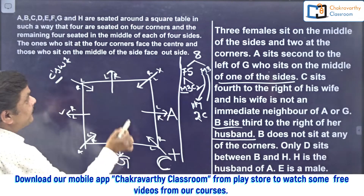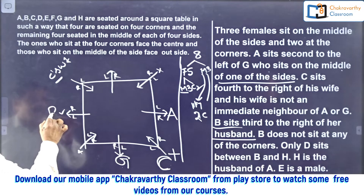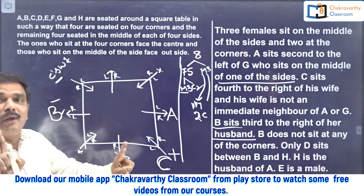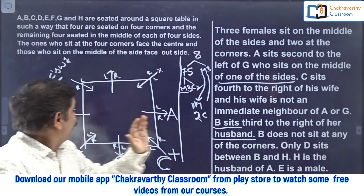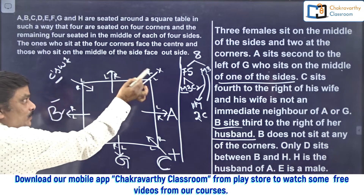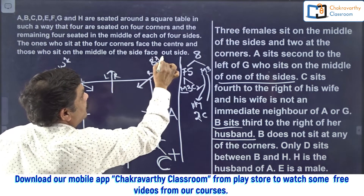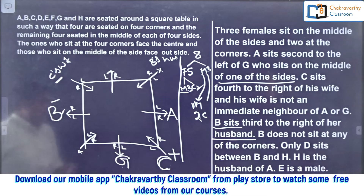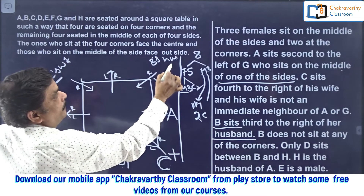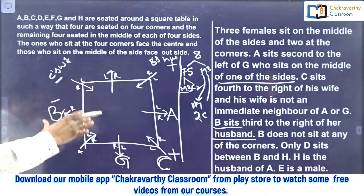When that place is eliminated for B, only one place is left — I am fixing B here, female. This place is third to the right of B's husband's place. This person here is facing inside, so right side is: first, second, third. This place must be given to B's husband — male. This is the twist in the question.